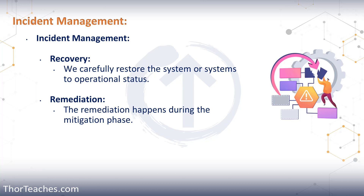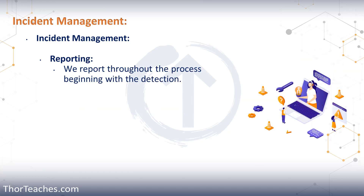We need to make sure that we have a good backup and that what we are restoring with is not infected as well. If the vulnerability that caused the incident is well known, we need to find if there's a patch. If it is not a known vulnerability, we need to see what we can do to mitigate the damages and make sure that even with the vulnerability present, we are still secure.